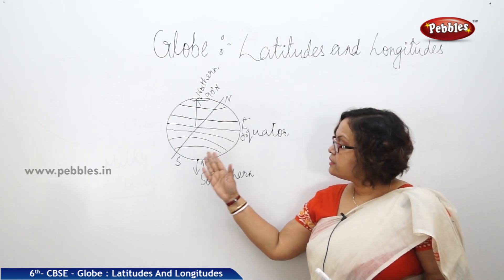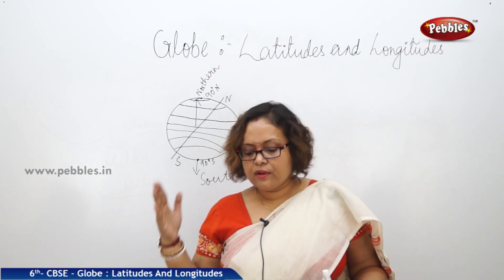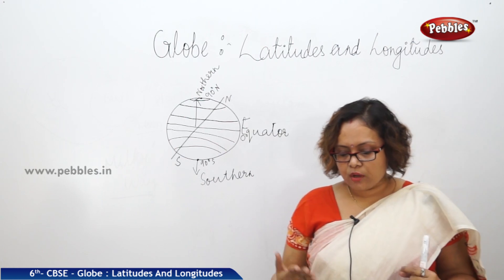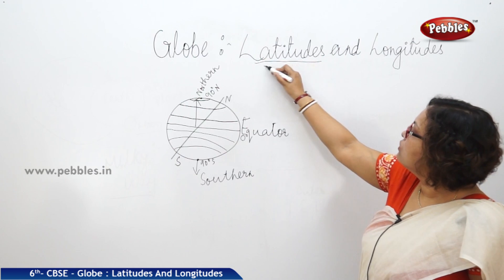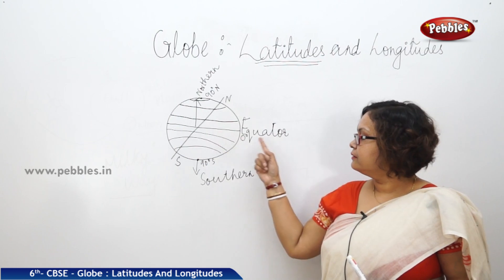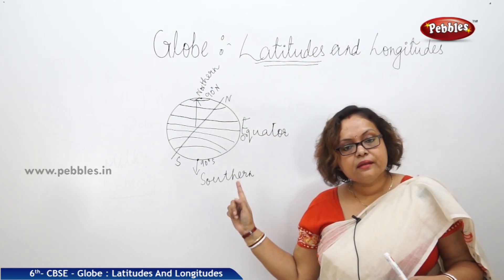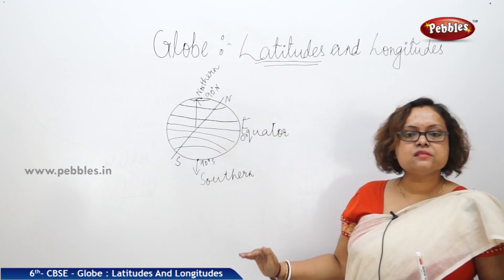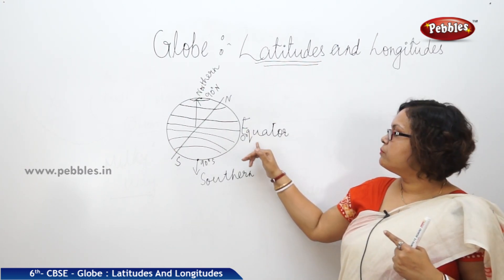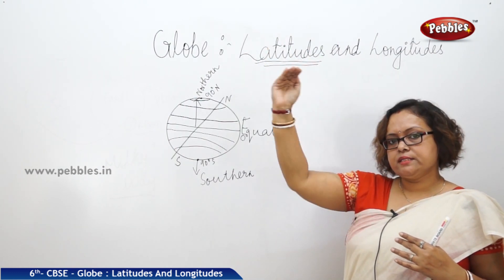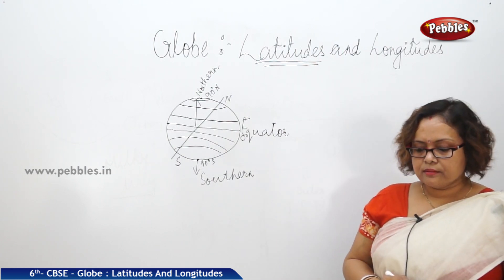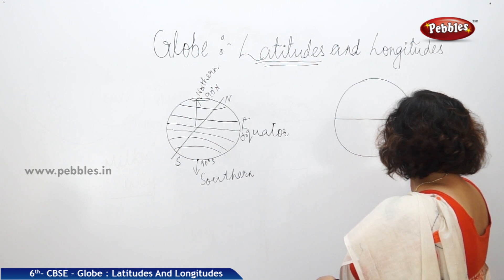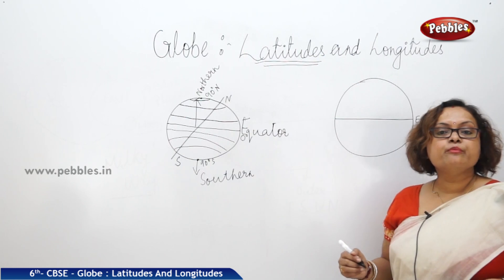Let us discuss the important parallels of latitudes. What is a latitude? A latitude is a line measured in degrees that runs from east to west, dividing the Earth into two hemispheres — north and south. These lines decrease in size as they go from the equator toward the poles.